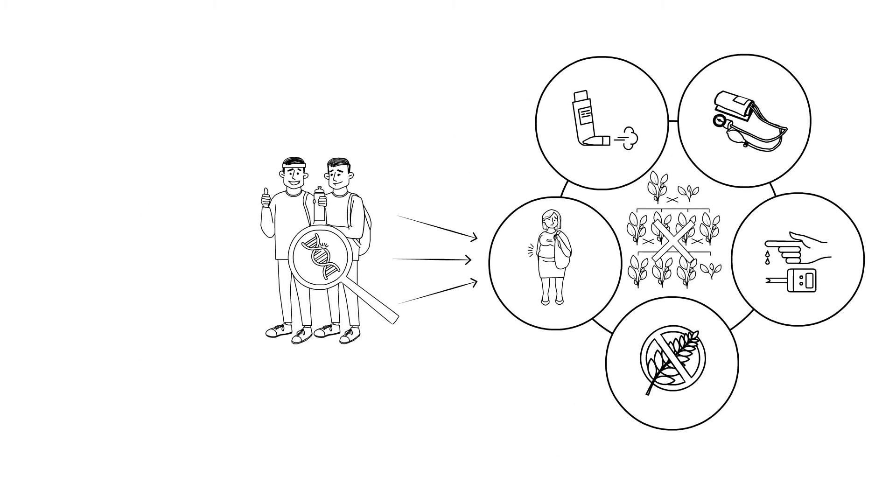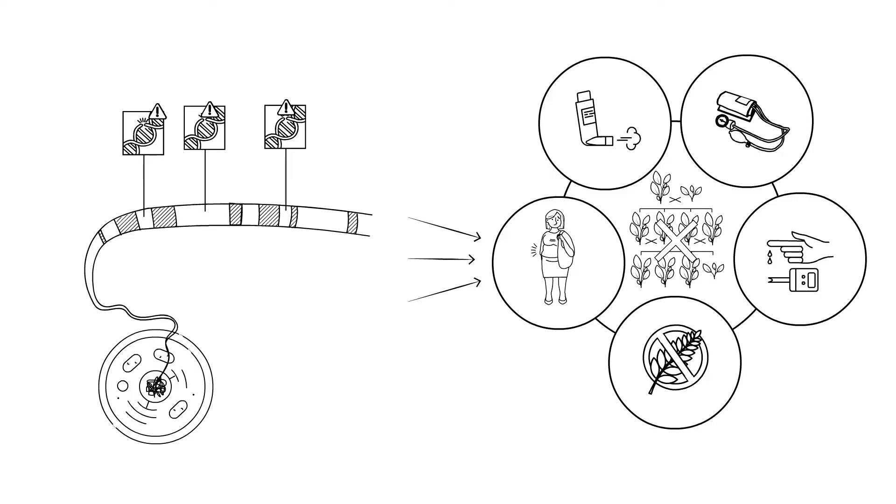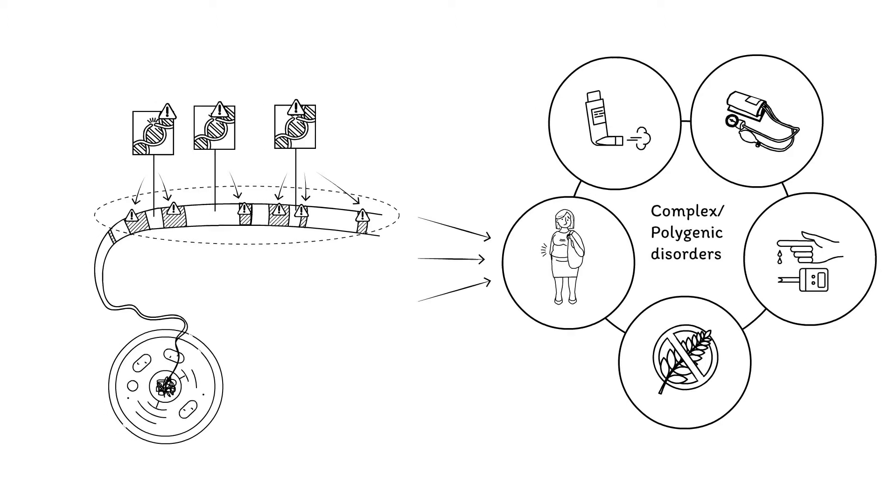Unlike Mendelian disorders, the genetic contribution consists of combinations of numerous weak genetic risk variants that affect multiple genes. Because there is no single cause of the disease, we call these diseases complex and polygenic.